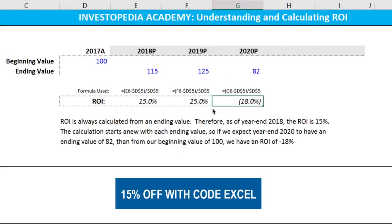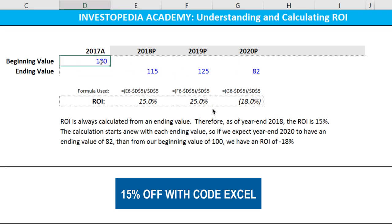Return on investment is a calculation that shows how an investment or asset class has performed over a certain period of time, expressed in percentage terms. The formula for calculating return on investment is very simple: it's simply the last value minus the beginning value, divided by the beginning value.